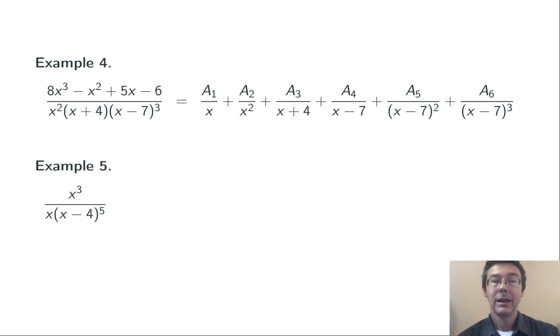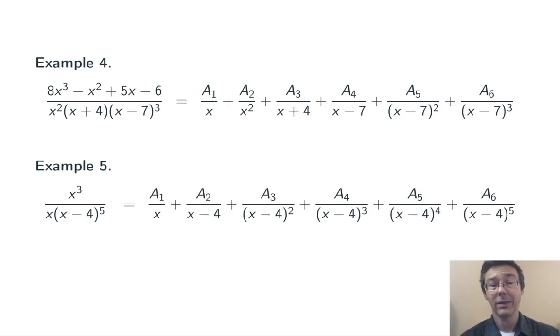One last example. x³/[x(x - 4)⁵]. So, constant over x, and then I need five terms for the (x - 4)⁵. With denominators (x - 4), (x - 4)², (x - 4)³, and so on. In each of these cases, actually computing the coefficients is going to be a royal pain.